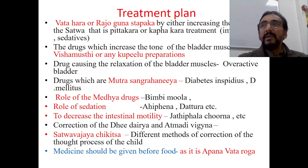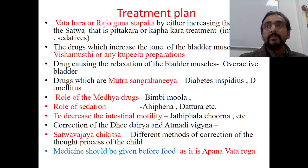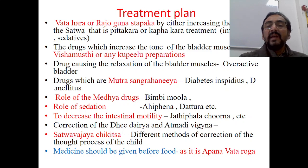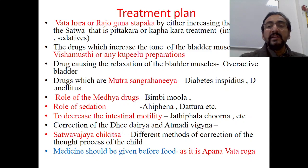Drugs which increase the tone of bladder muscles can also be used. Kupilu preparations are quite useful for increasing bladder tone. Similarly, Vacha-like preparations are helpful in increasing muscle tone — Vacha not only acts as a Medhya drug but also helps increase muscle tone. If the child has an overactive bladder, drugs causing relaxation of the bladder muscles can be given in such conditions.